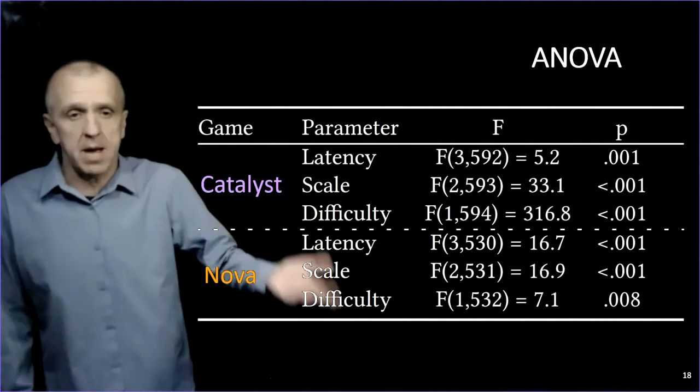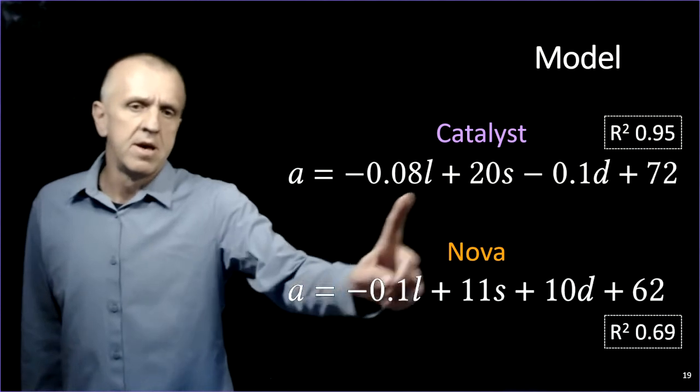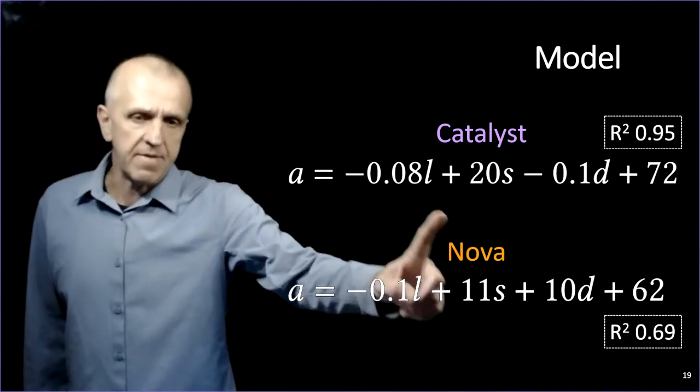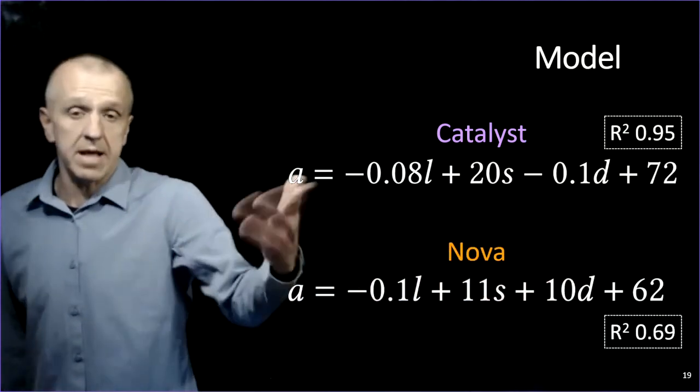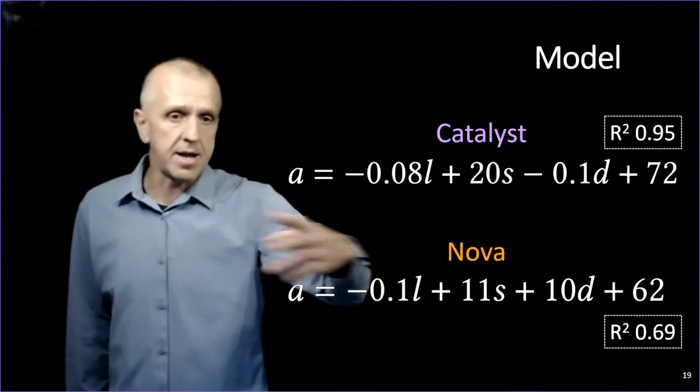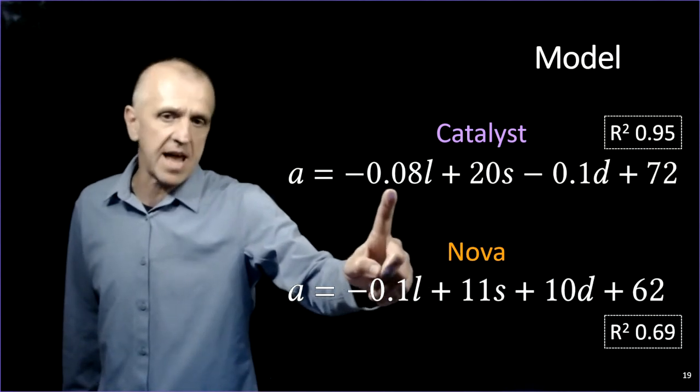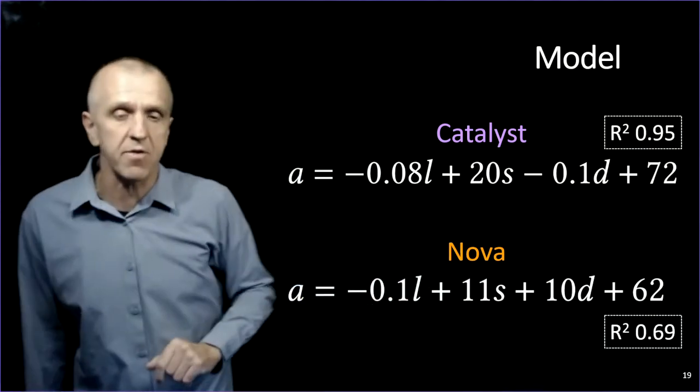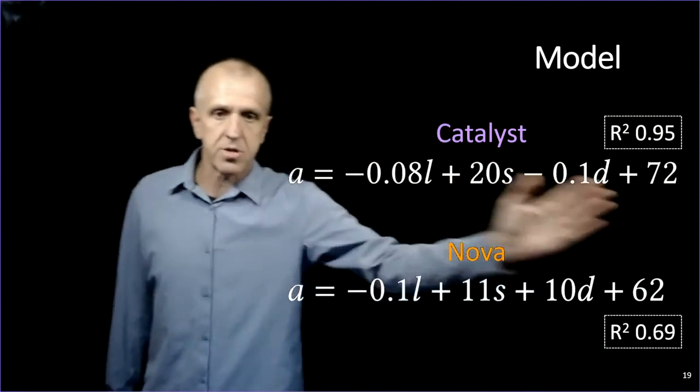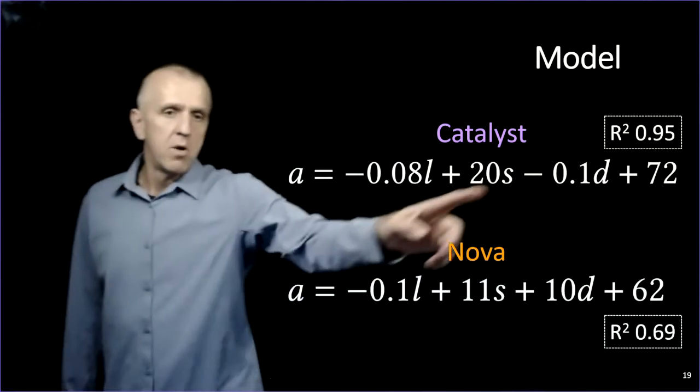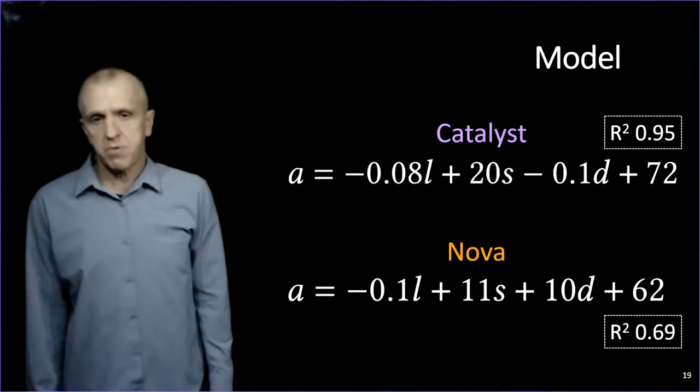So it seems promising. So next step is, let's model that. So what are we modeling exactly? Can I predict accuracy? So given for Catalyst, given a latency, given a scale value, and given a difficulty of the game, can I predict what the accuracy would be? That's this equation. Nice and simple. Add them linearly, these are the coefficients. Each millisecond of latency decreases accuracy by 0.08. That's how you read that, for example. The scale factor increases by 20 for each number, and likewise difficulty. So those are, you could put meaning into the coefficients if you want. But either way, we can predict accuracy with R squared at 0.95. So it's pretty strong for Catalyst.